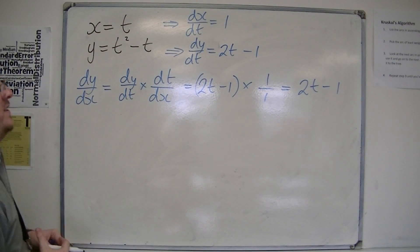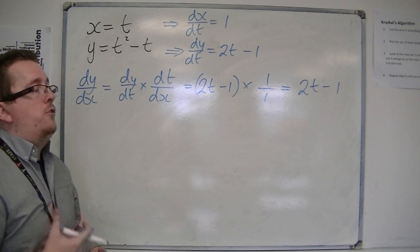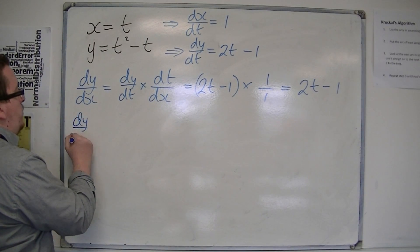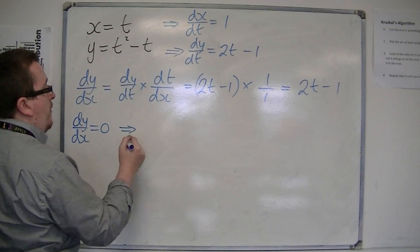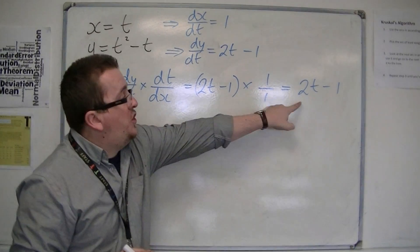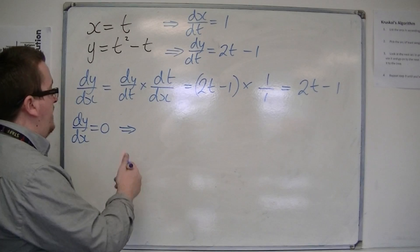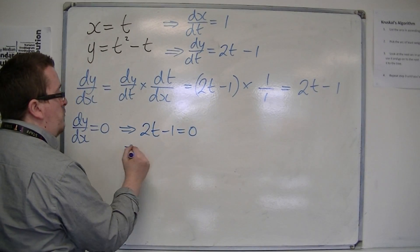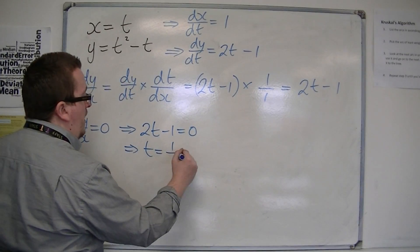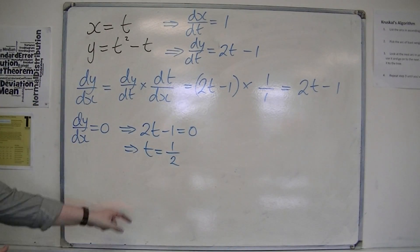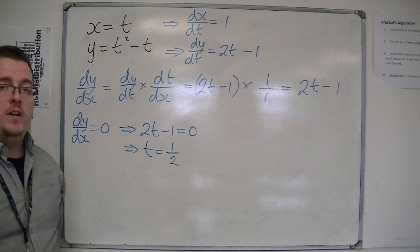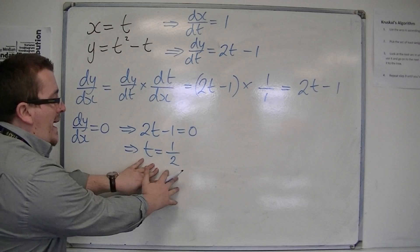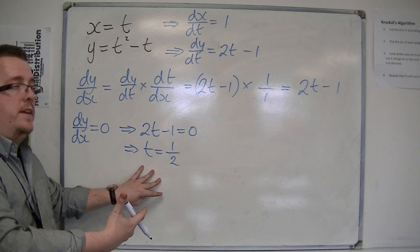Now I need to determine where there are stationary points. Stationary points occur when dy/dx equals 0. That would imply that 2t minus 1 would have to be 0. 2t minus 1 is 0 when t equals 1/2. Add 1 to both sides and divide both sides by 2. That tells me when the stationary point occurs.